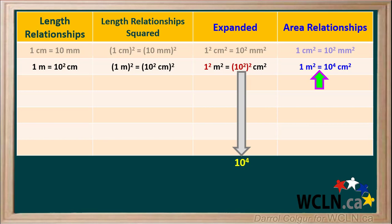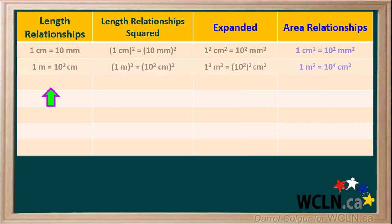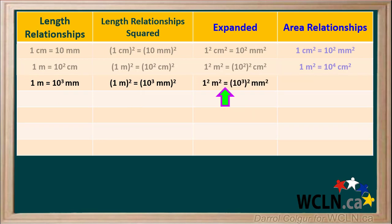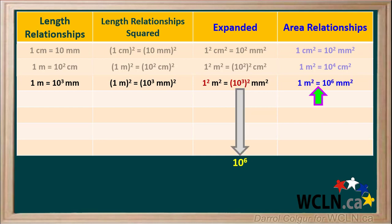So now we have the equation: one meter squared is equal to ten to the fourth centimeters squared. We can use this equation to compare area in meters squared to area in centimeters squared. We also know that one meter equals one thousand millimeters, or ten to the power of three millimeters. Squaring both sides and expanding, one squared equals one and ten to the third squared equals ten to the power of six. So one square meter equals ten to the sixth square millimeters, or one million square millimeters.